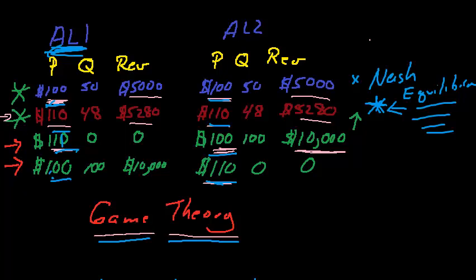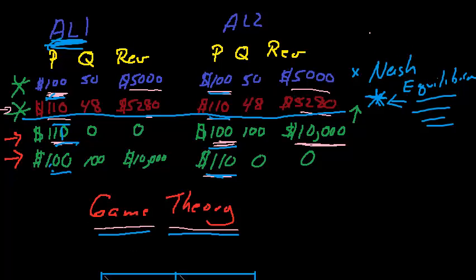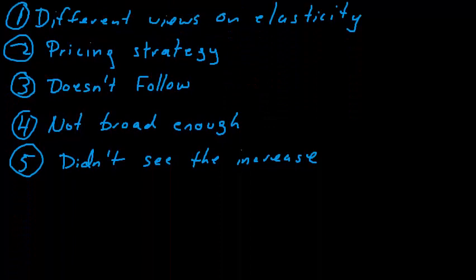So let's just think about this in terms of if this is the optimal outcome, both airlines increased fares, what would be some of the reasons that Airline 2 would not go along with that increase? So let's go down here, and I've gone ahead and written some of them out, just because sometimes it takes me too long to write and type and talk at the same time. So the first thing is, well, they could have different views on elasticity, right?